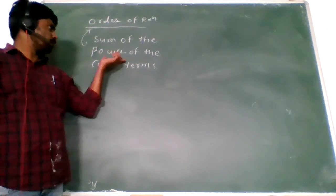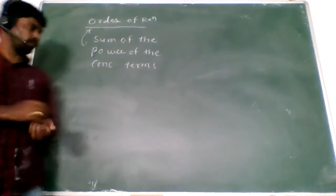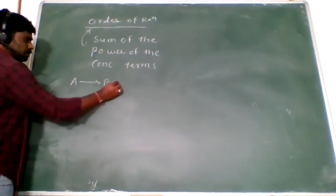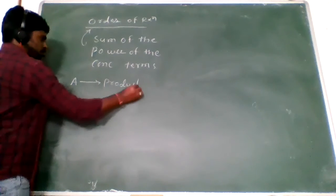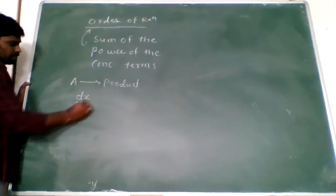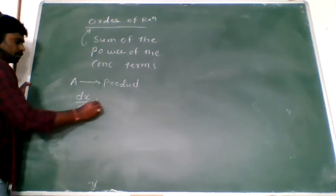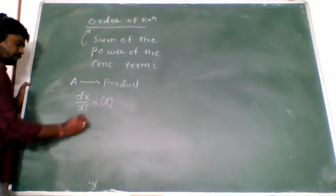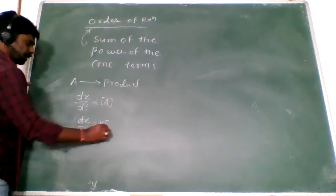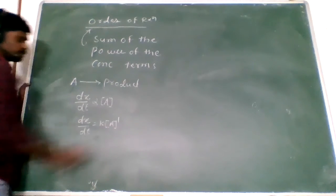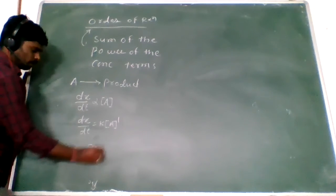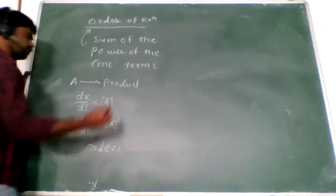What is that — sum of the power of the concentration terms? Look at here. I am taking A as the reactant, formation of product. I am writing the rate of reaction for this one: dx/dt is directly proportional to A. That is equal to K into A power one. Here the concentration of the reactant is one, so that's why order equals one.